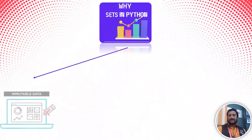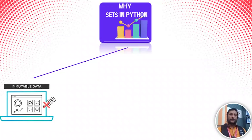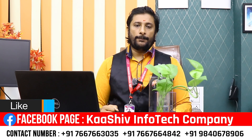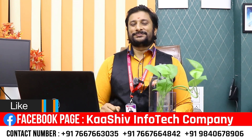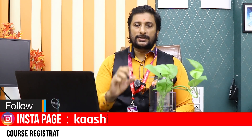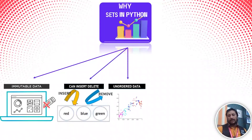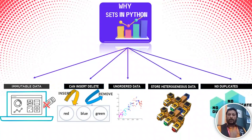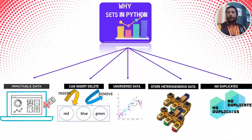Let's see what we have in this video: what is a set, set operations. First, the elements inside a set are immutable — you cannot modify the individual data. But you can insert or remove data from the set itself. When you print the set, it is unordered, so you cannot rely on order.